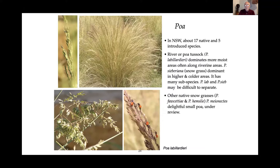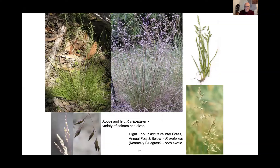Here are some more of these — the Poa sieberiana, which can be quite colourful and are more likely to be found in the high country. A couple of introduced ones: Poa annua at the top, also called winter grass or annual poa, and then Kentucky bluegrass, which is quite commonly seen around this area.